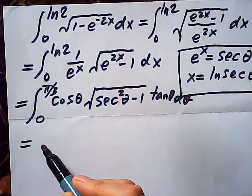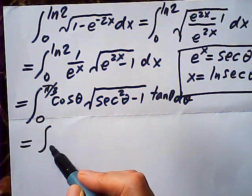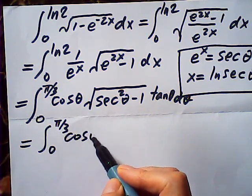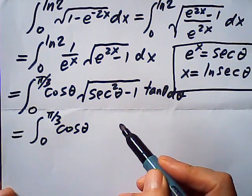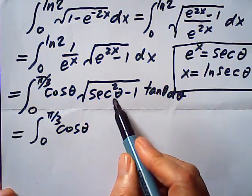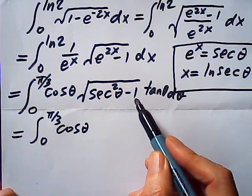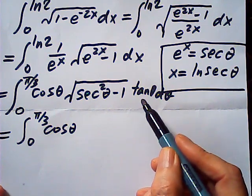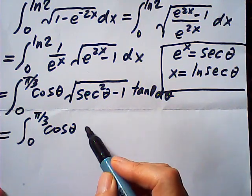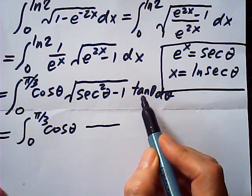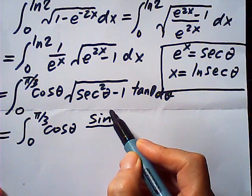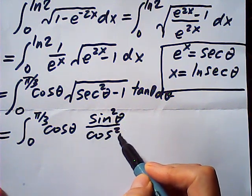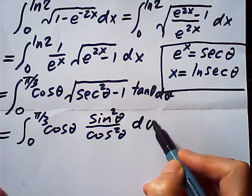So the integral becomes the integral from 0 to pi over 3 of cosine theta times — since secant squared theta minus 1 is tangent squared, the square root becomes tangent. Tangent squared is sine squared over cosine squared, d theta.